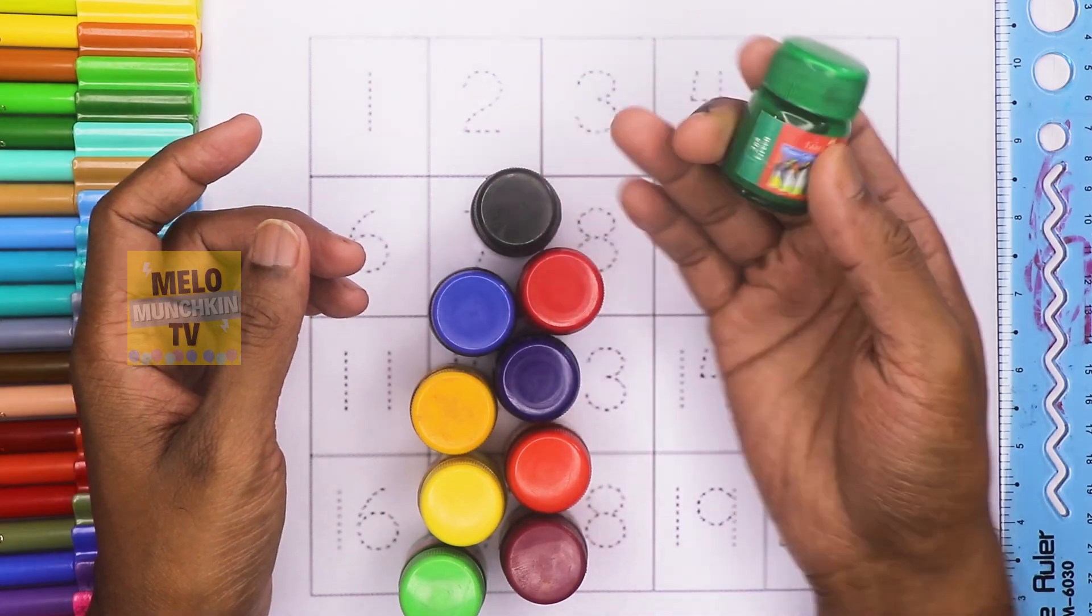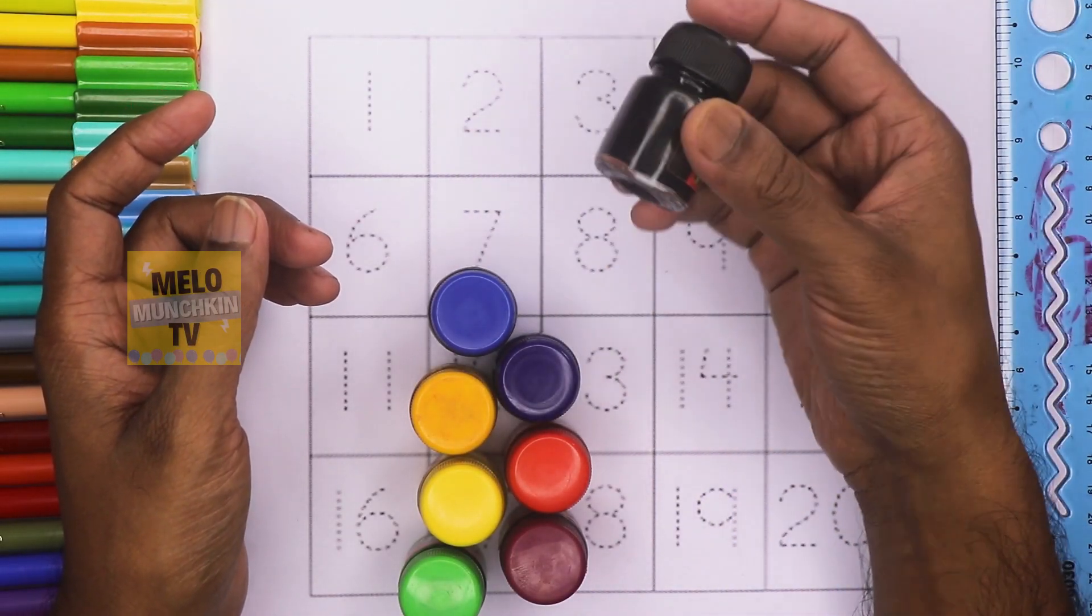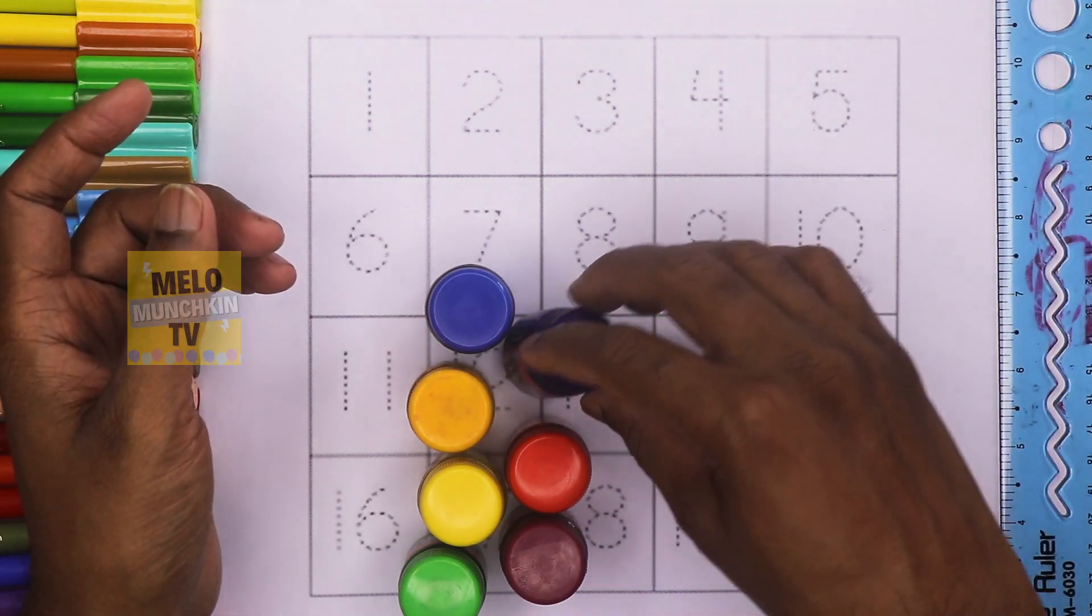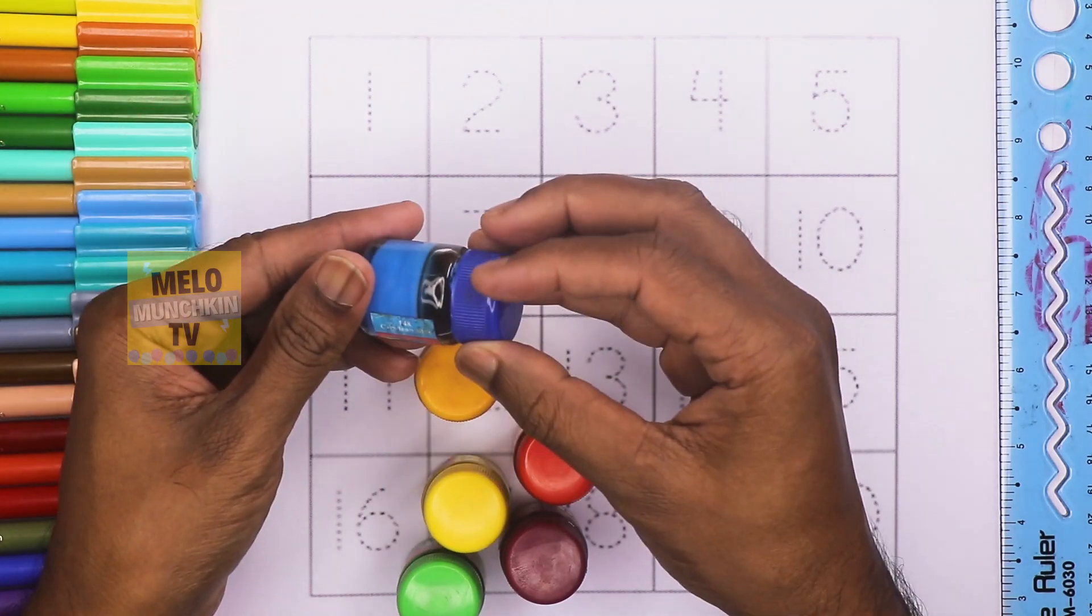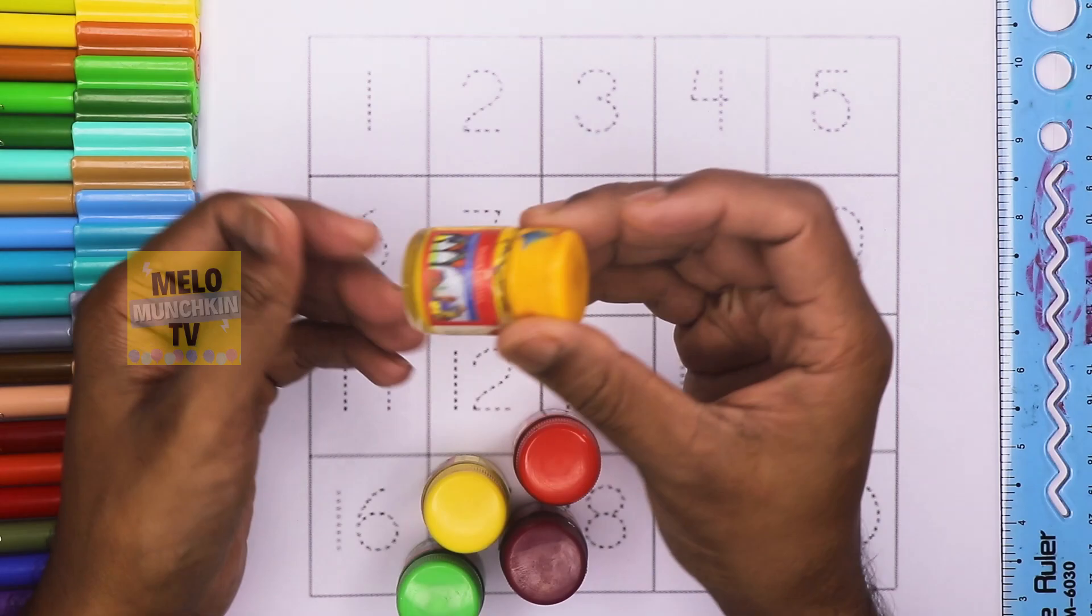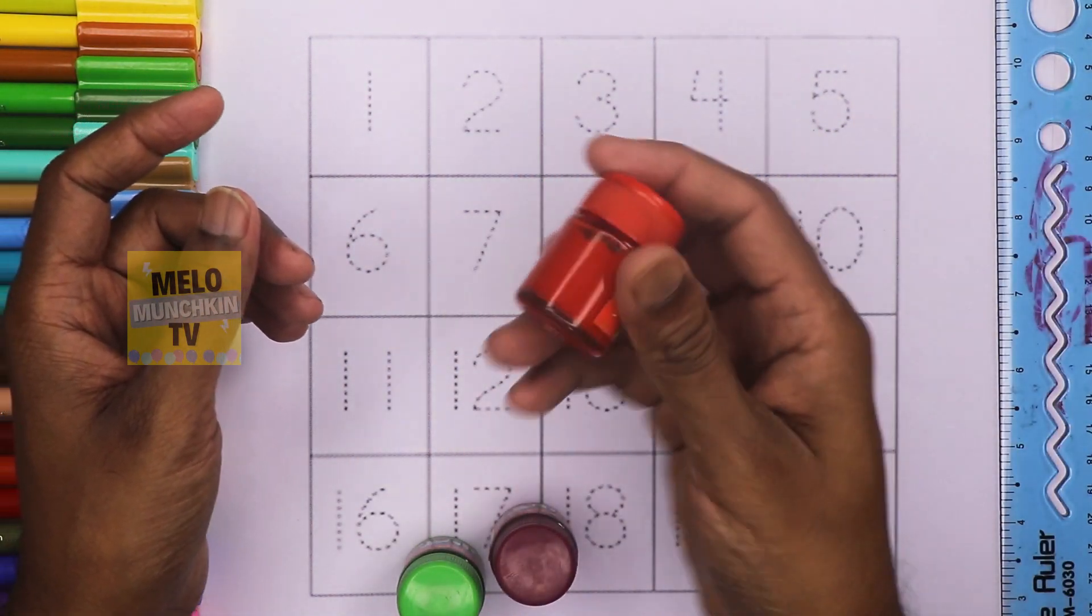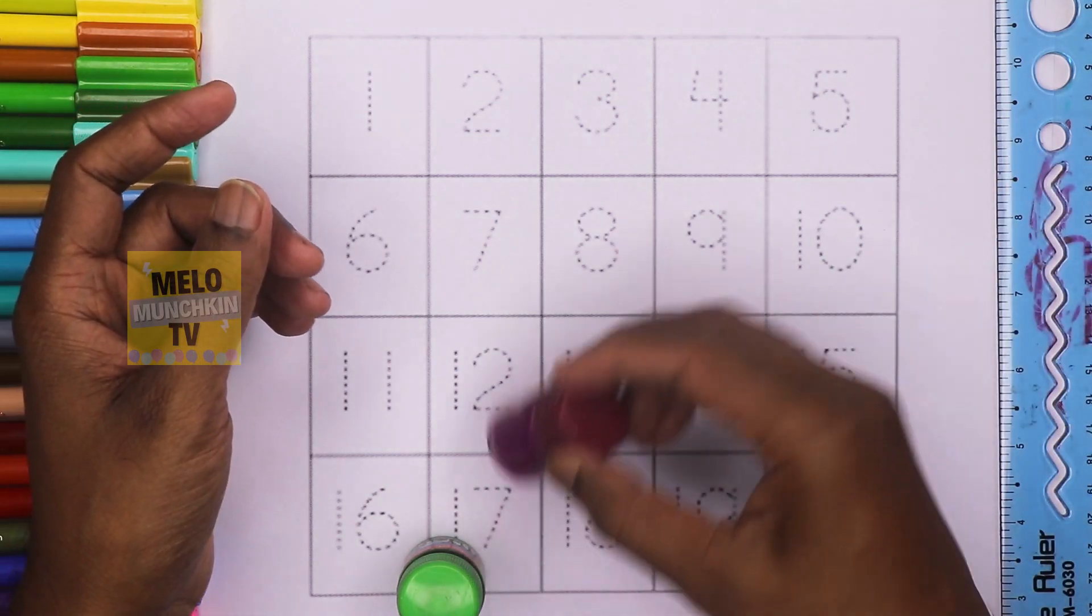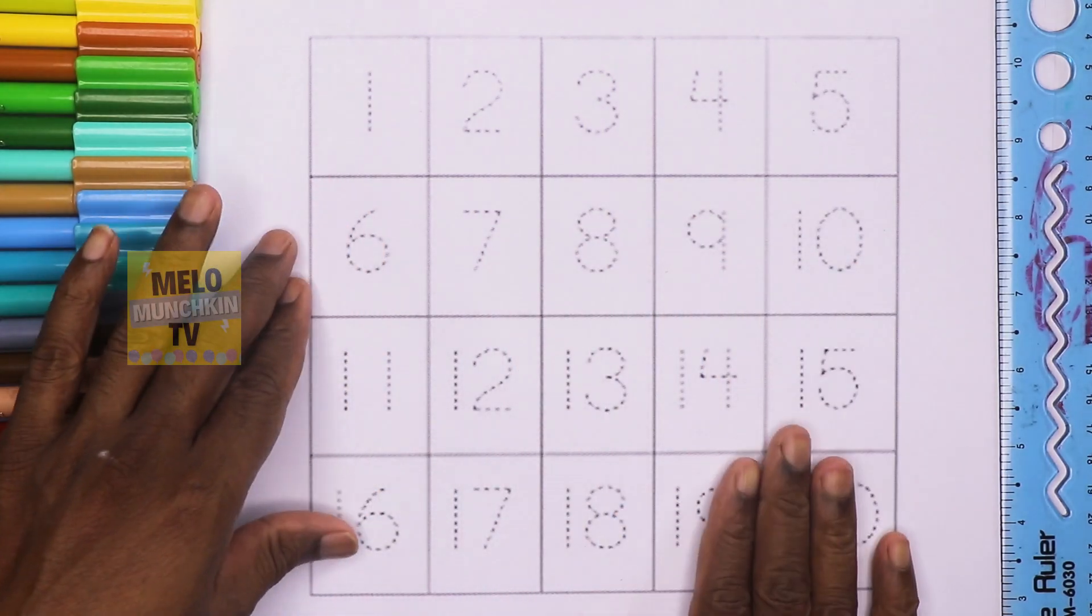This is dark green color, this is red color, black color. This is Persian blue, this is sky blue, chrome yellow, lemon yellow, orange color, magenta, light green. So let's start numbers.